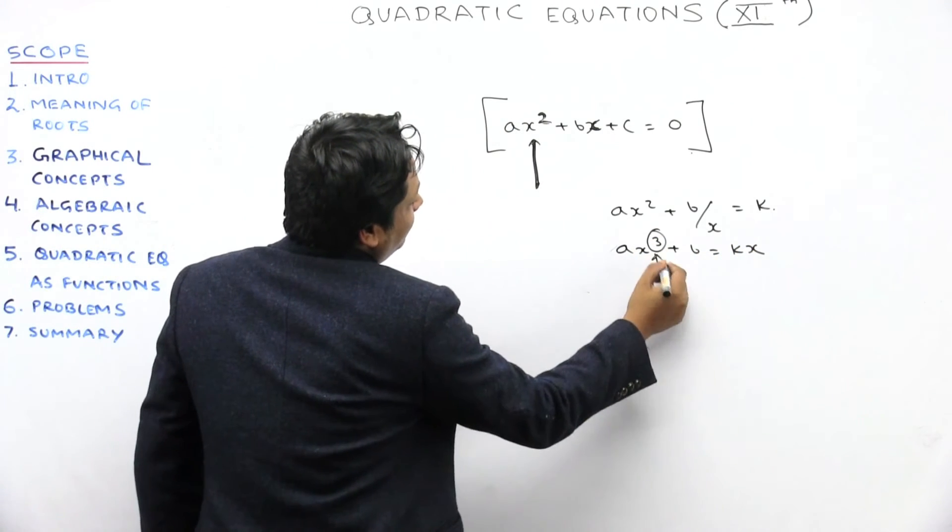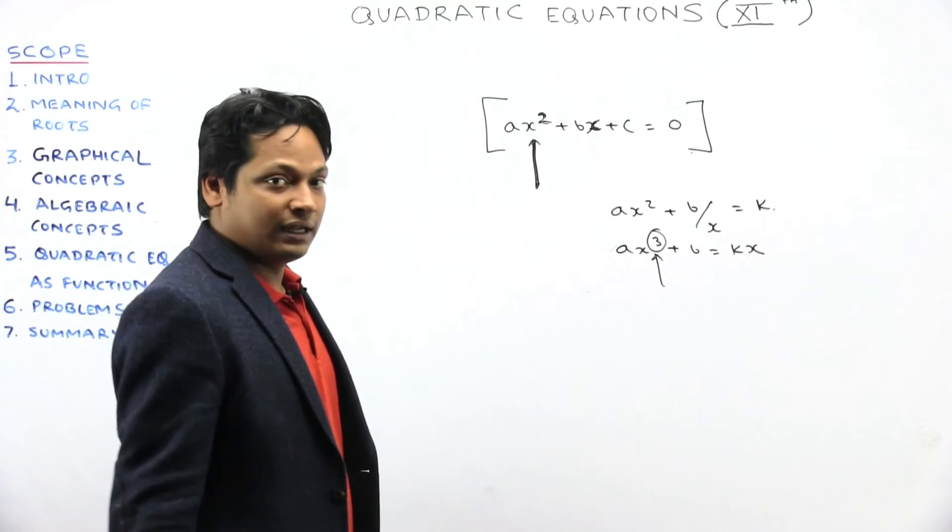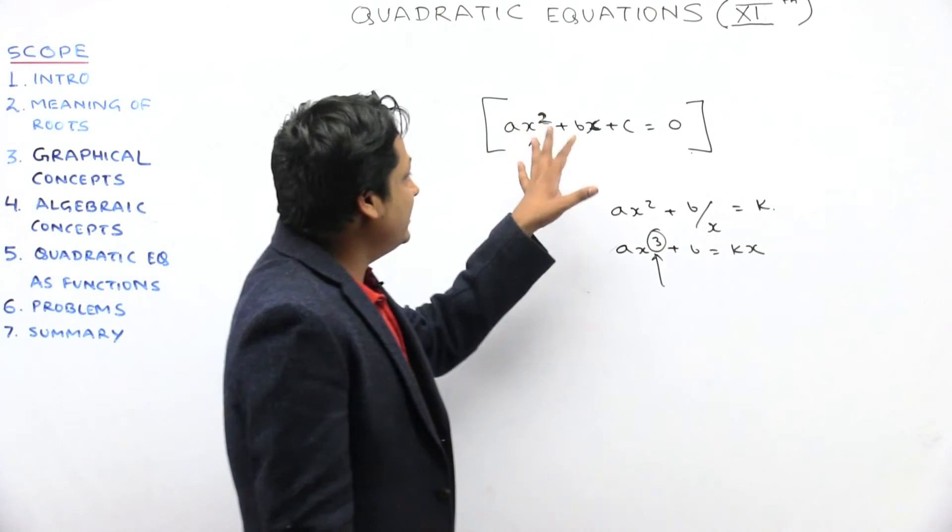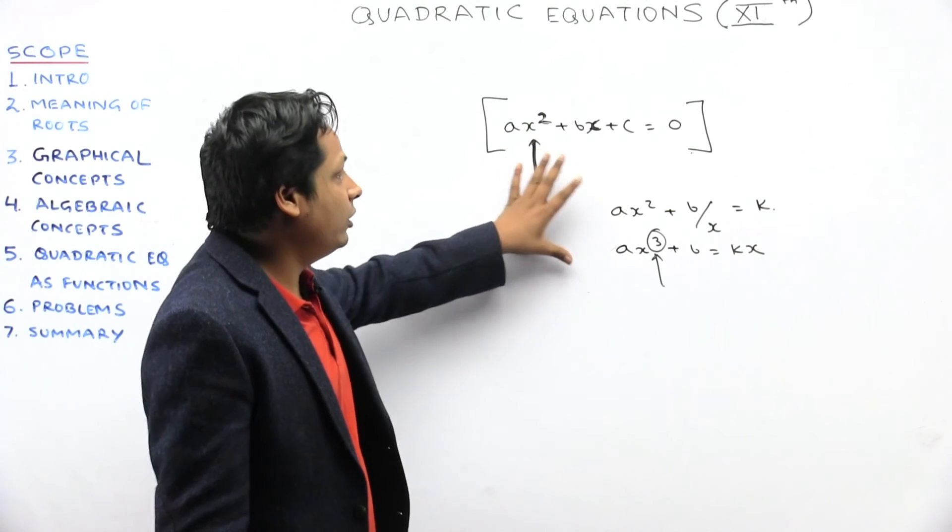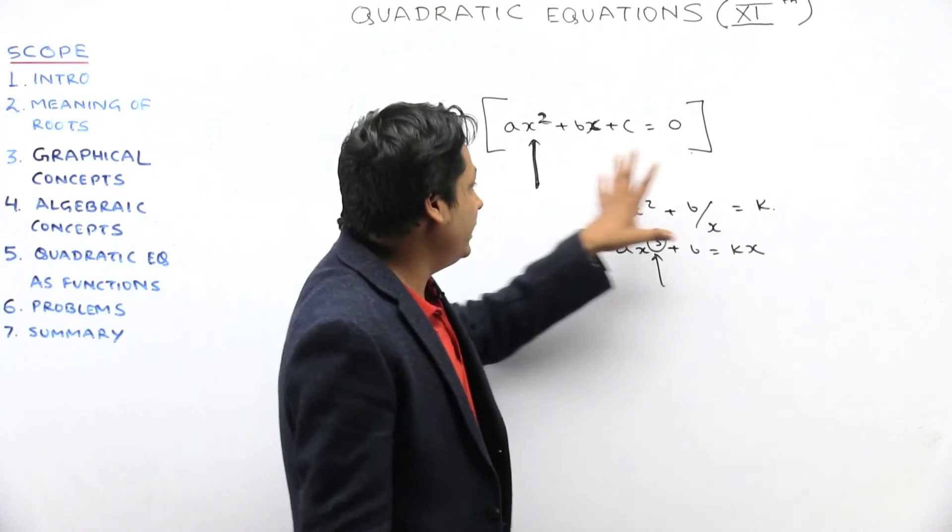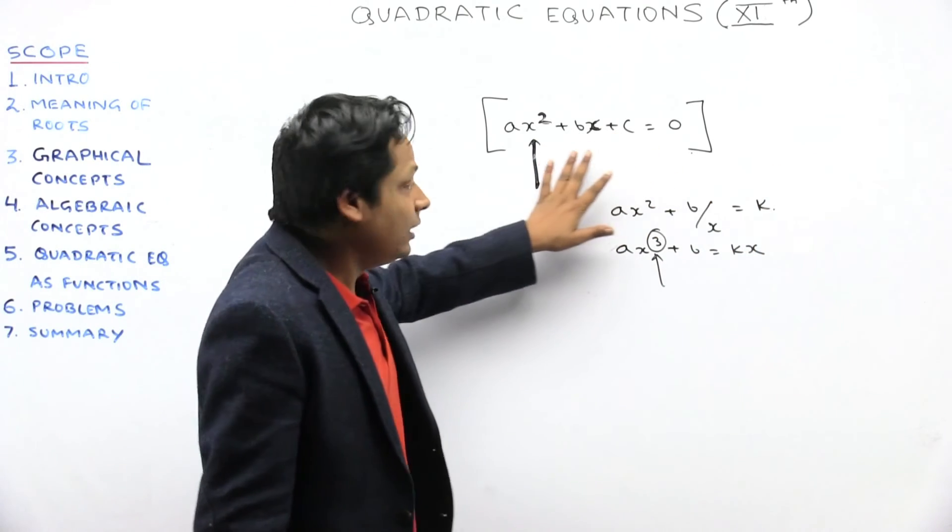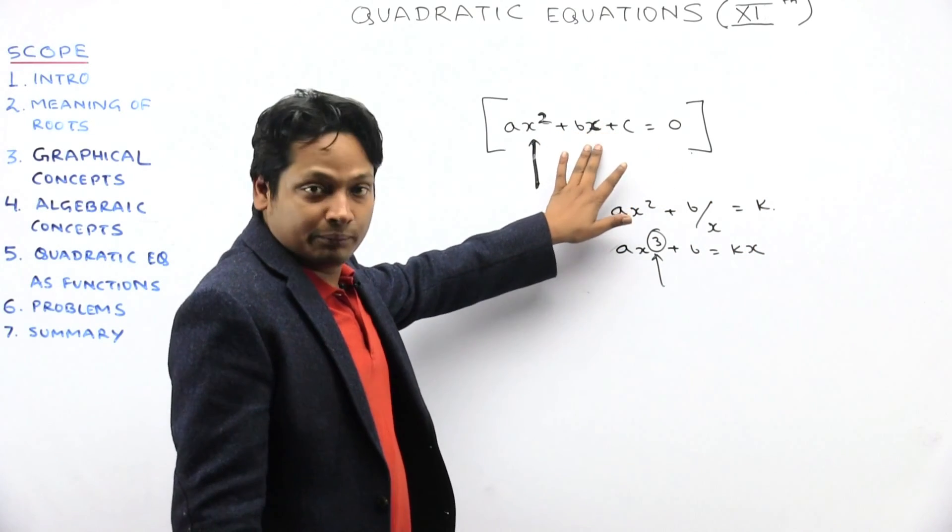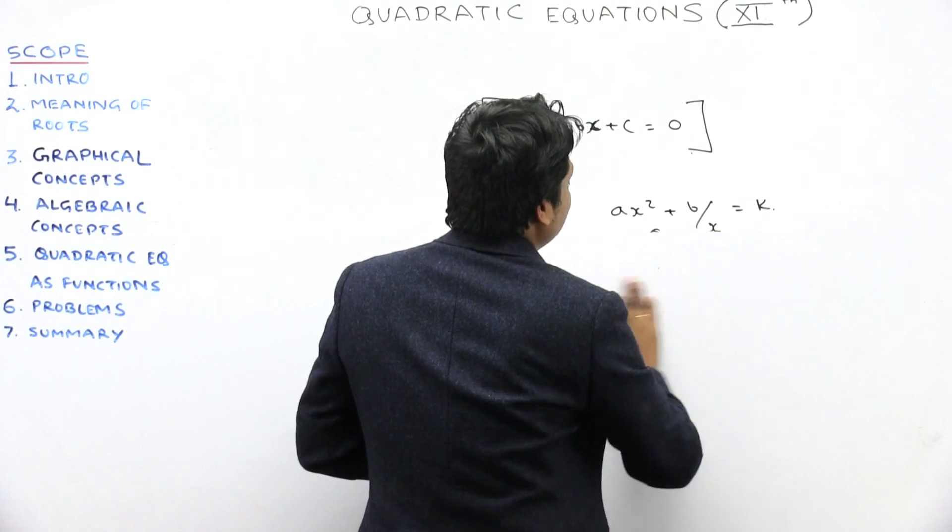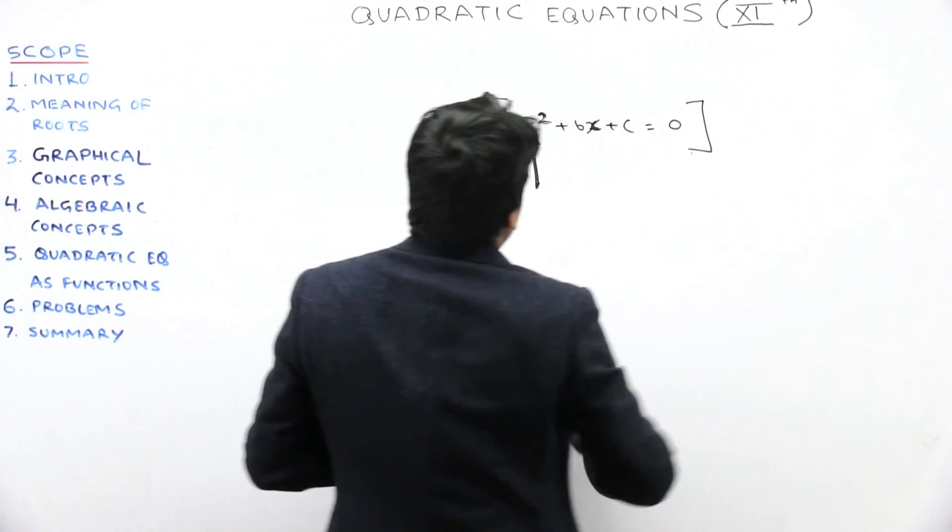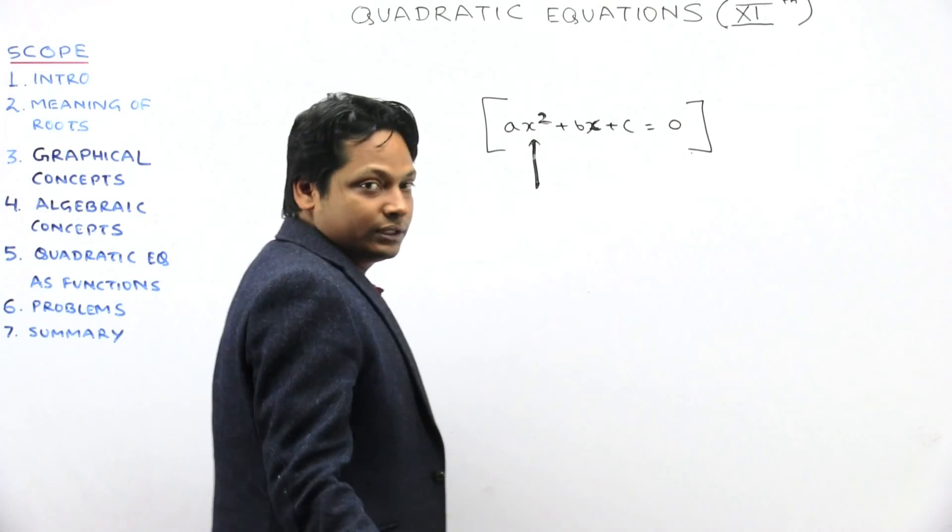So you can see that if the power of x is in the cube, straight away you know that's not a quadratic equation. You have to see that the maximum power of x is 2, and other x powers should be positive integers. That will qualify as a quadratic equation. So this is our general form of quadratic equation.